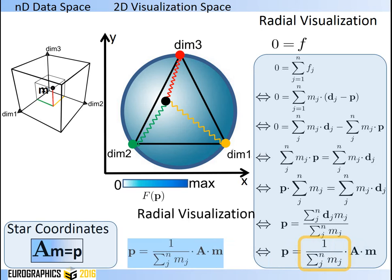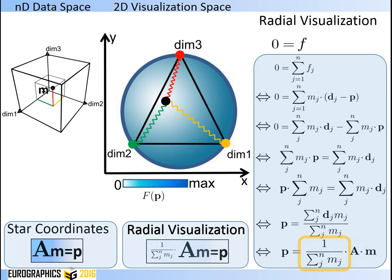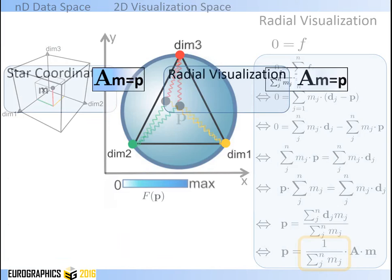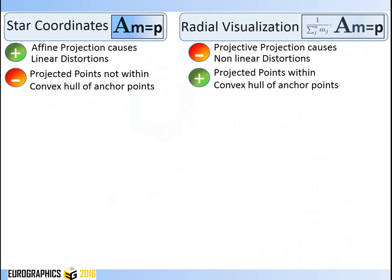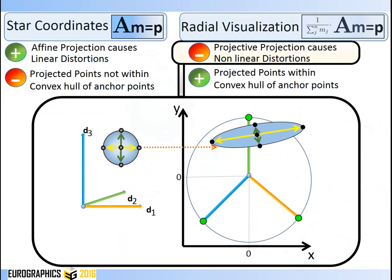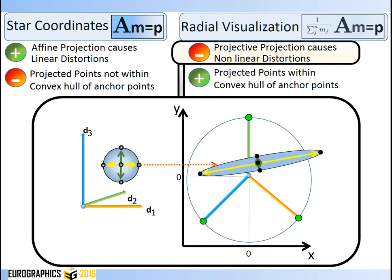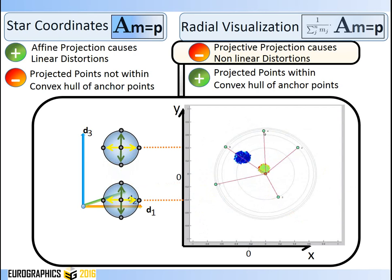Even though star coordinates and radial visualizations seem almost equal, they are not. Radial visualizations are a projective projection, which maps straight lines to straight lines and preserves the cross-ratio for co-linear points, thus introducing a non-linear distortion. In detail, a hypersphere in the data is mapped onto an ellipse in the visualization space, and the aspect ratio of this ellipse changes if the original data position changes. This distortion might mislead the analyst enormously — for instance, two circles of the same size in the data appear different in the projection.